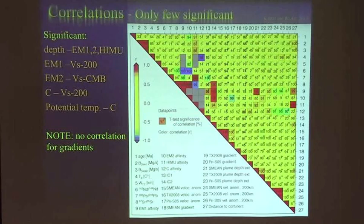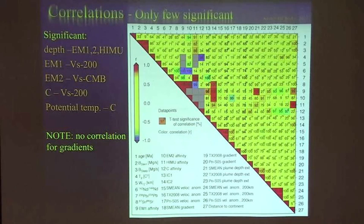Another audience comment: if Matt Jackson were here, he'd point out that some isotopic signatures also correlate with major elements of the erupted lavas, pointing to some sort of petrologic effect. Another question: what about correlation with age of the lithosphere at the time of volcanism? We didn't look at that — and the hotspots included also had continental ones.